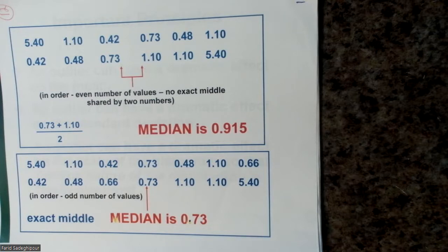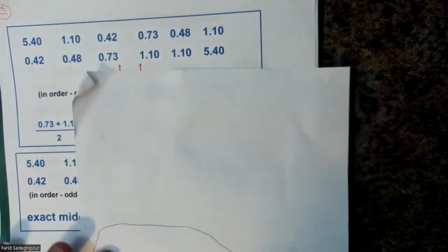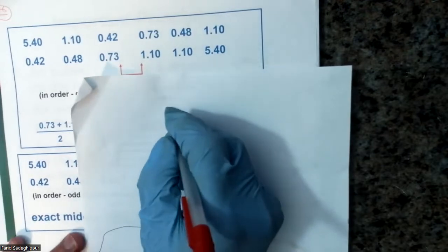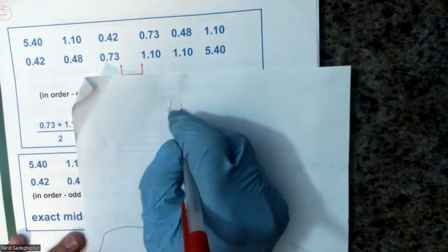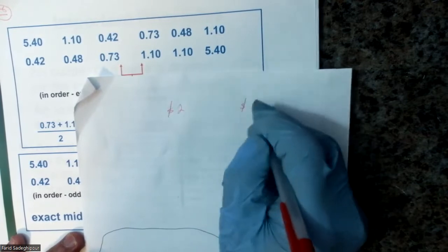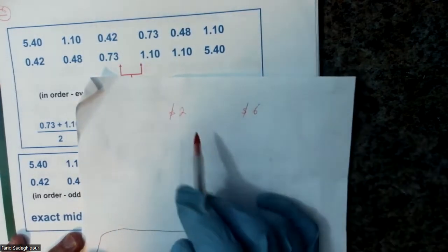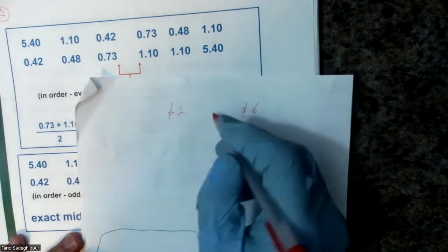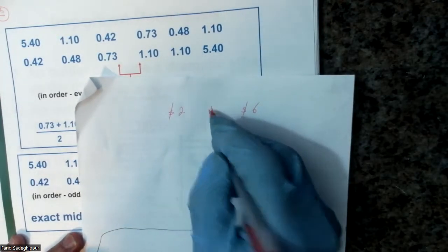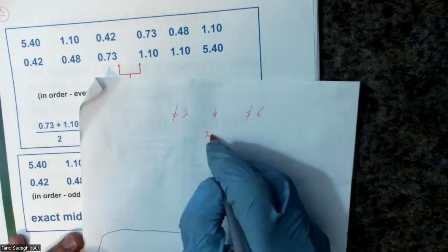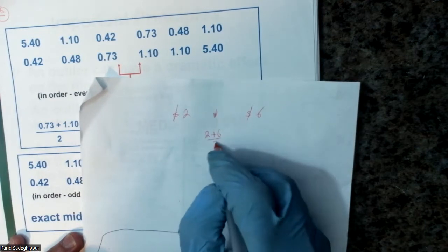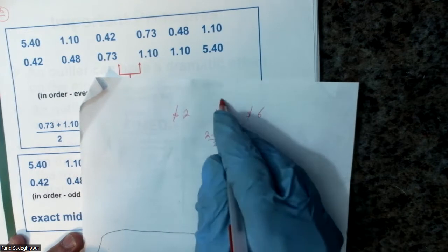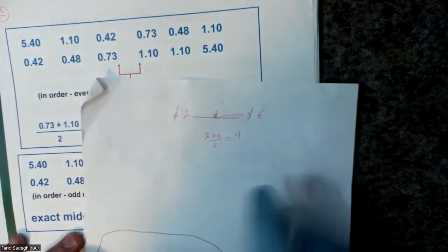Let me show you how we do the calculations. If you have two numbers — say two dollars and six dollars — the average is (2 + 6) / 2 = 4. Four is the number exactly in the middle of those two values.